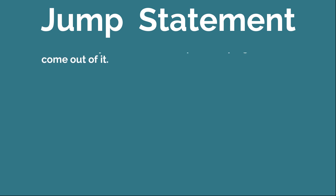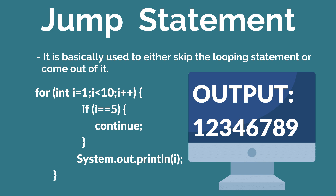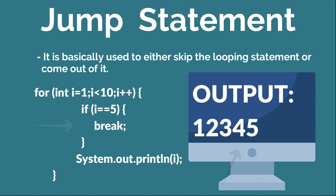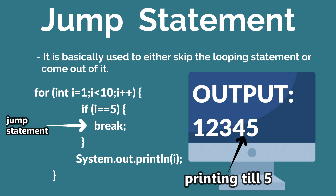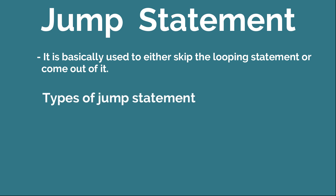The last one is Jump Statements. It is basically used to either skip looping statements or come out of them. For example, if you are printing values from one to ten and you want to skip printing the value five, you can use the continue statement. Whereas if you want to come out of a loop and only print values from one to five, you can use the break keyword. So by using break and continue, you can either exit the loop or skip a particular statement being executed by the loop. Jump Statements consist of two things: break and continue.